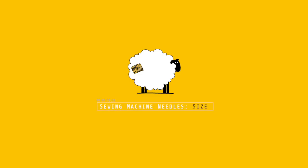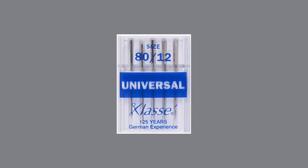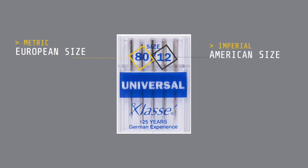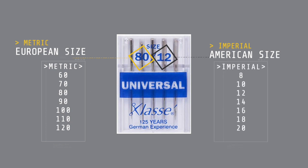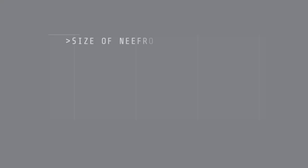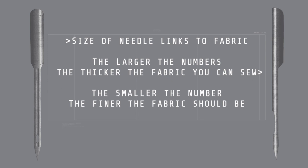That covers the types of needles — now let's talk about needle size. Machine needle packaging has two sets of numbers: the European system, which is metric with larger numbers, and the American system, which is imperial with smaller numbers. The larger the number, the thicker the needle. The size links to the fabric — larger numbers for thicker fabric, and conversely, smaller numbers are for sewing finer fabrics.